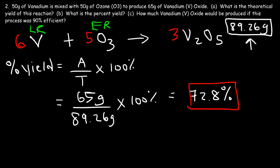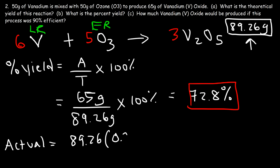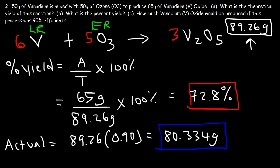Part C: how much vanadium oxide would be produced if this process was 90% efficient? We're looking for the actual yield, which is the theoretical yield times the percentage. That's 89.26 times 0.90, which equals 80.334 grams. So if the process was 90% efficient, we would collect 80.334 grams of vanadium 5 oxide in this reaction.